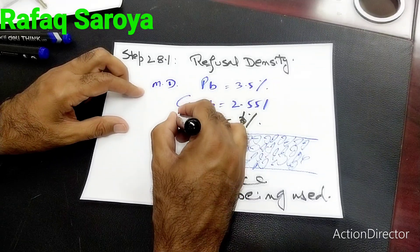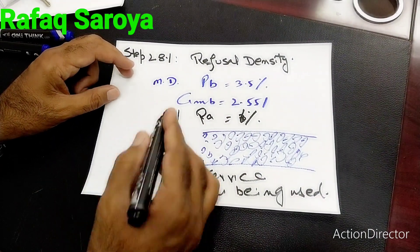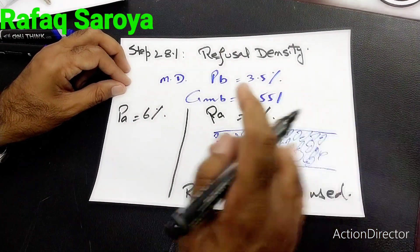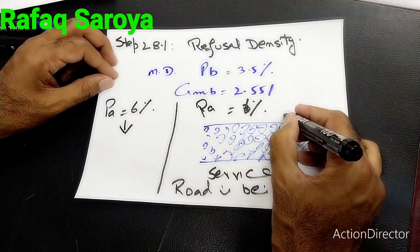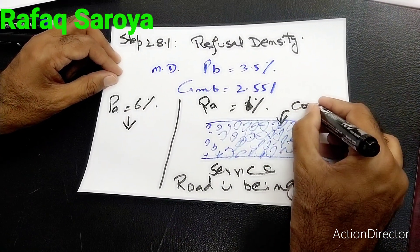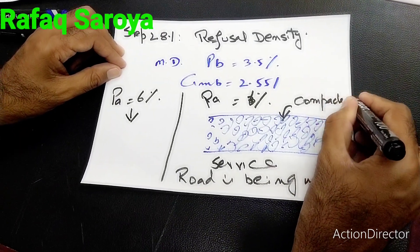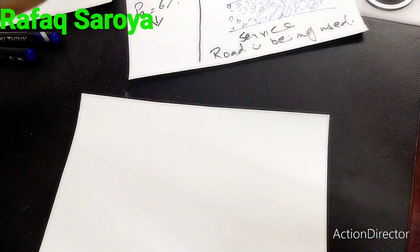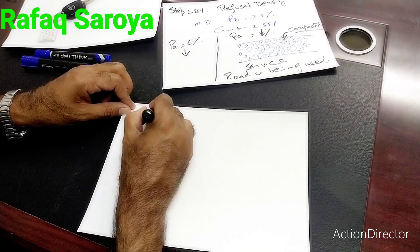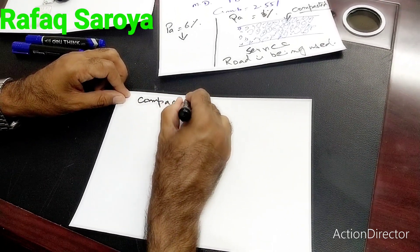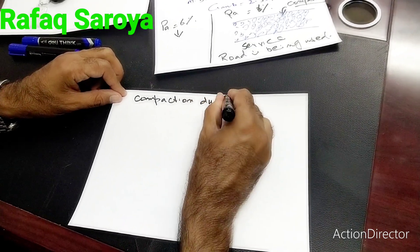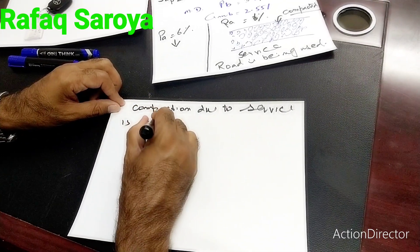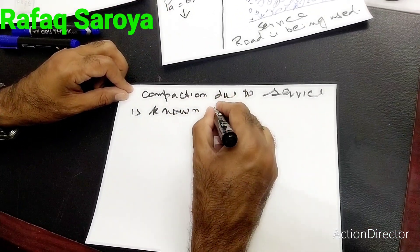As the road is being used, there is one very important point. The preliminary air voids, as I told you, is 6%. During the service life, the road is being further compacted. This type of compaction due to service is known as secondary compaction.